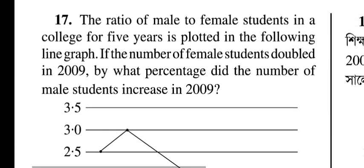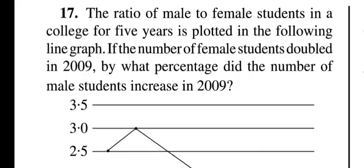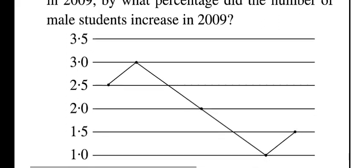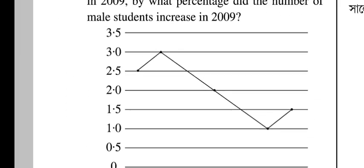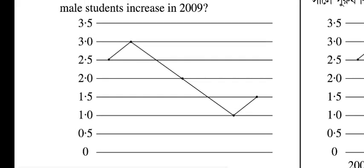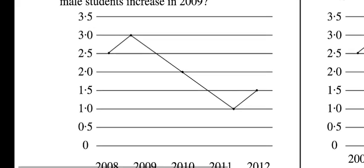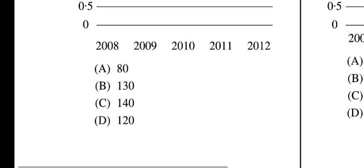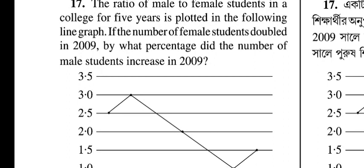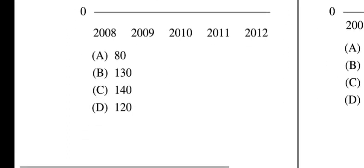Question seventeen: the ratio of male to female students in a college for five years is plotted in a line graph. If the number of female students doubled in 2009, by what percentage did the number of male students increase in 2009? Options: 81, 31, 140, 20. Question seventeen, option C is correct: 140.